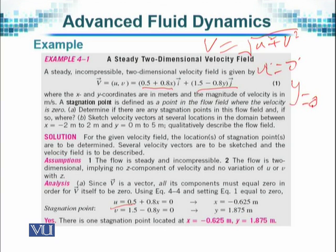If I substitute U equal to zero, then we will obtain the X coordinate from there and the X coordinate turns out to be minus 0.625 meters. It has been given that all these measurements are in meters and the velocity is in meters per second. In a similar way, we have to put the V component also equal to zero. When we do that, we see that the result of Y is 1.875 meters. We have a non-zero answer. Therefore, yes, the stagnation point exists and is located at X equal to minus 0.625 meters, Y equal to 1.875 meters.